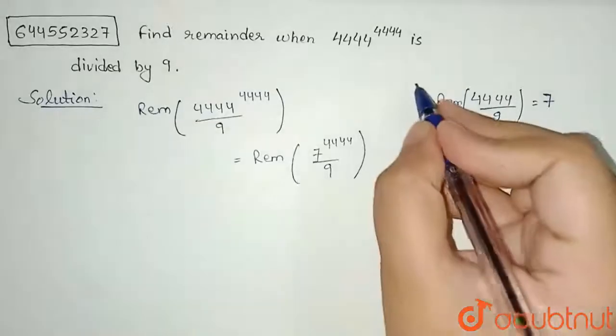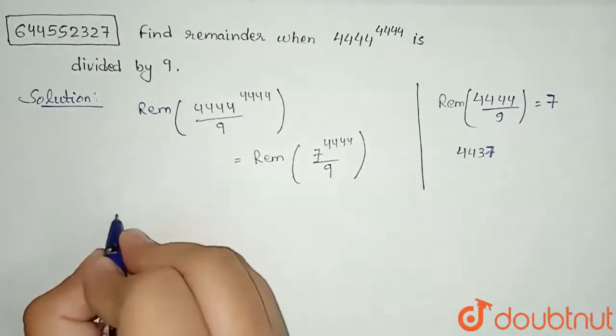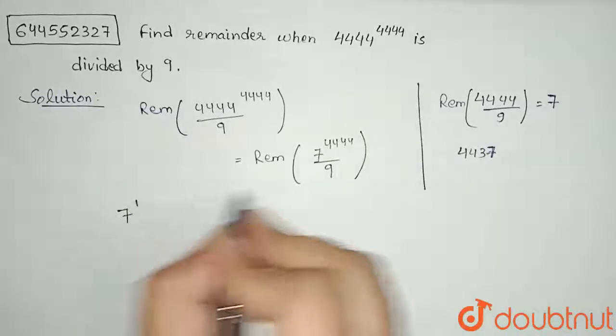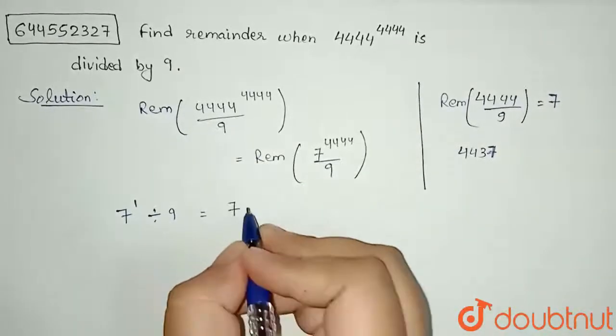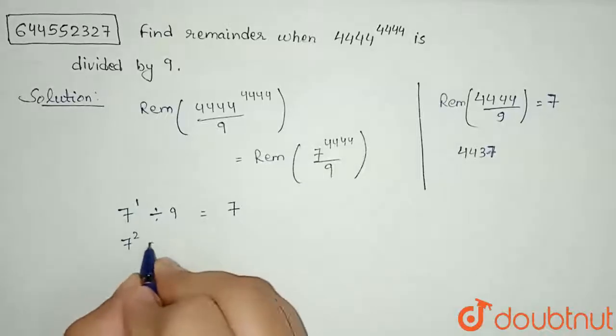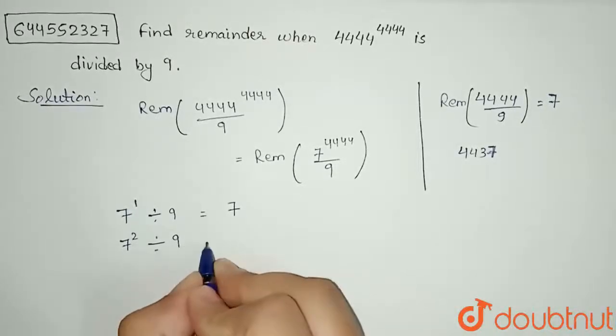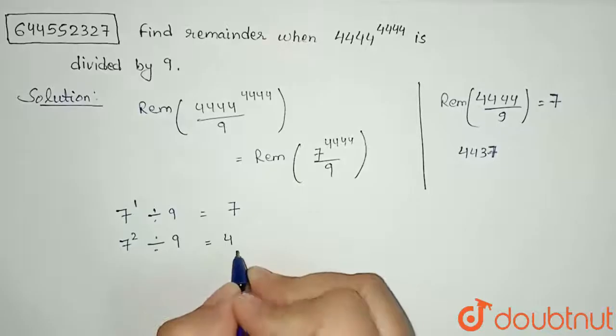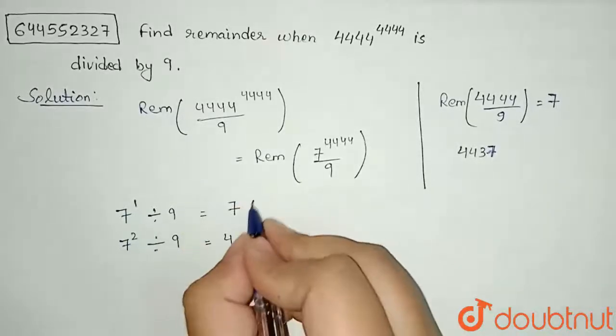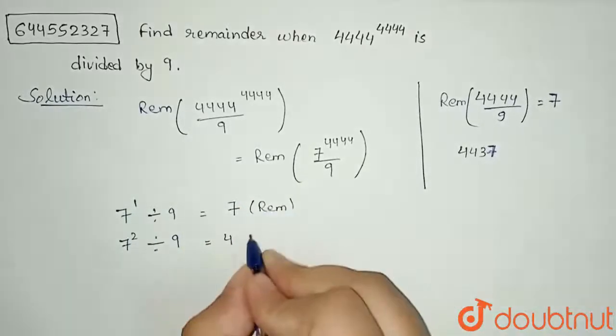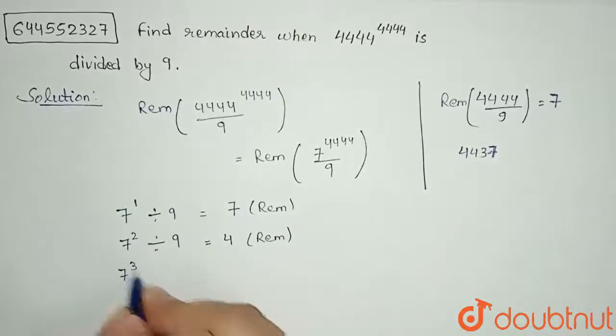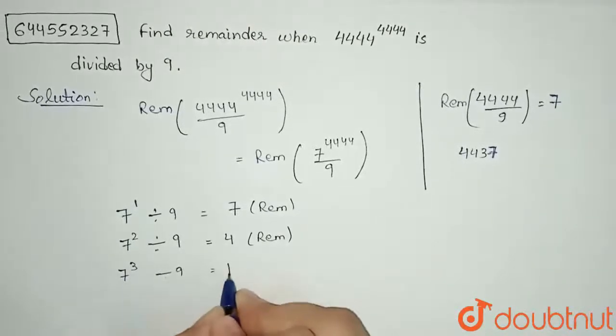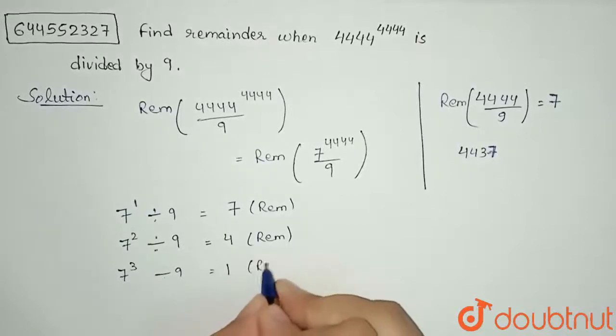Now if we observe the pattern, I can make a pattern. 7 to the power 1 divided by 9, remainder will be 7. If I divide 7 square, which is 49, divided by 9, remainder will be 4. This is my remainder. If I divide 7 cube by 9, then remainder will be 1.